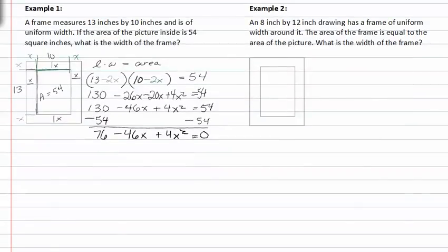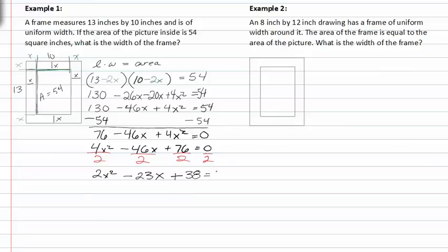From here we need to write this quadratic equation in descending order of exponents. Everything is divisible by two, so I'm going to divide everything by two at this point. Zero divided by two is zero, so I get two x squared minus twenty-three x plus thirty-eight equals zero. Factoring, we get two x minus nineteen and x minus two.